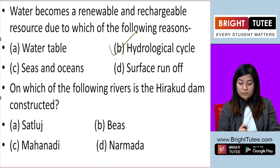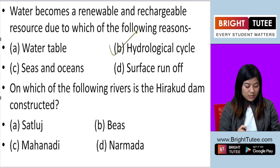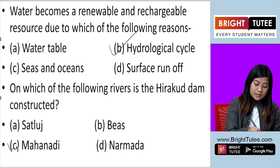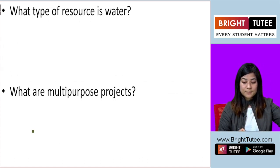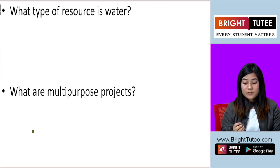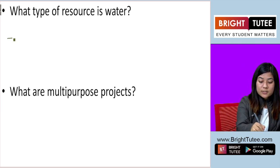On which of the following rivers is the Hirakud dam constructed? Is it Satluj, is it Beas, is it Mahanadi, or is it Narmada? The correct answer is Mahanadi. The next question: what type of resource is water? Water is...